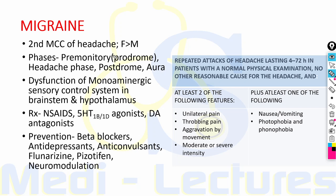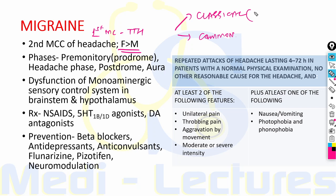Females are more commonly affected by migraine. It is classified into two types: classical migraine (migraine with aura) and common migraine (without aura). Common migraine is more common, as the name suggests.